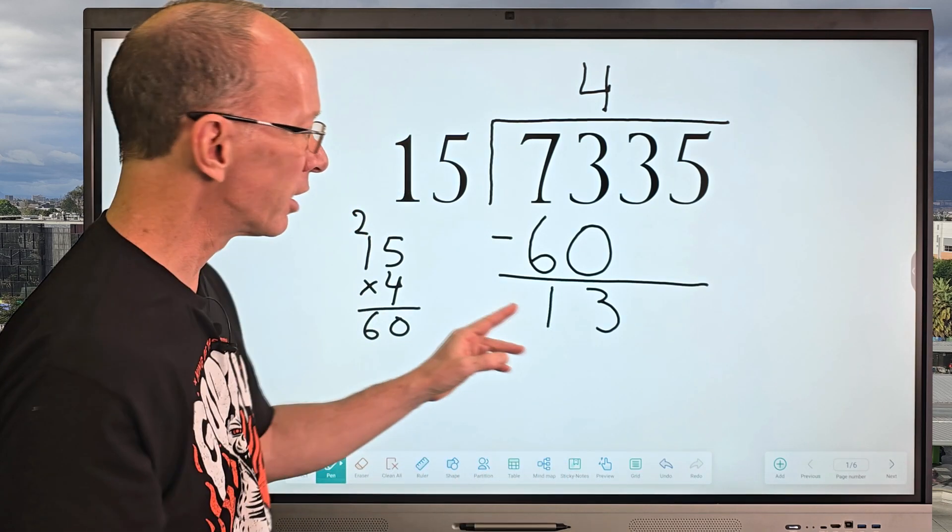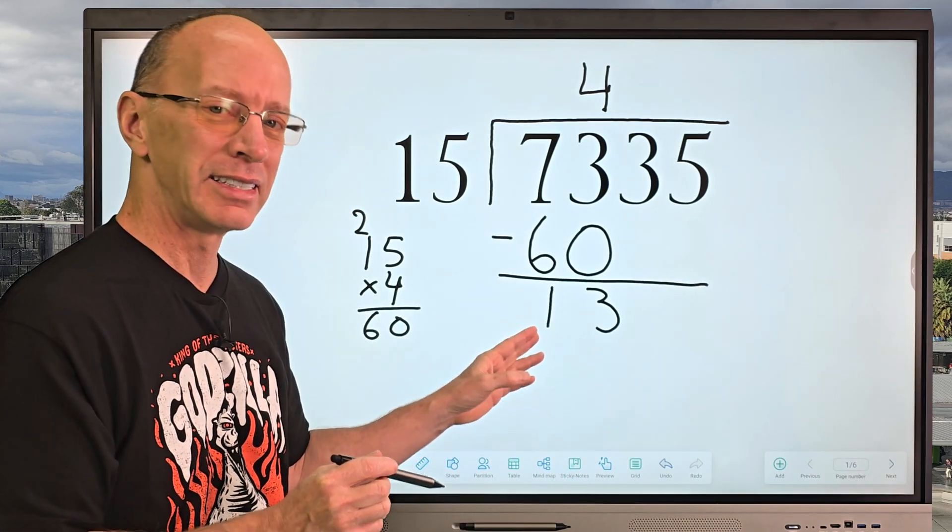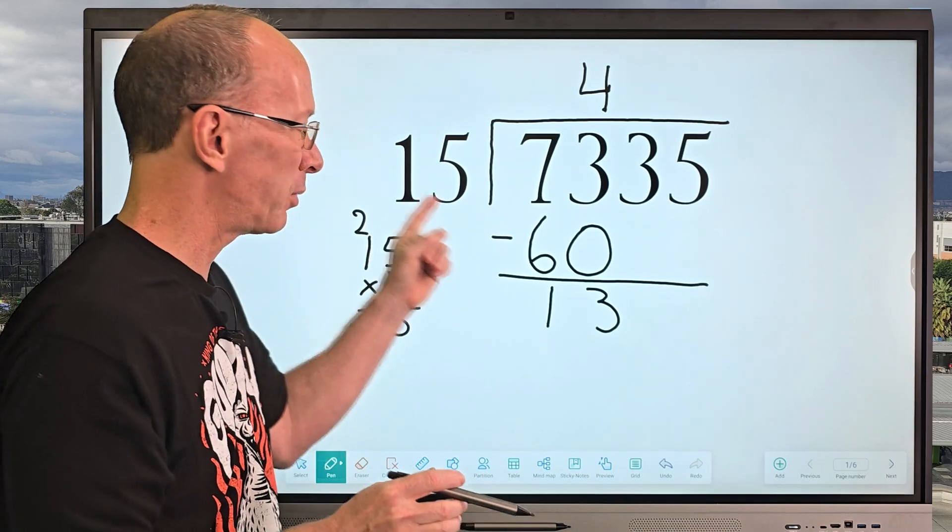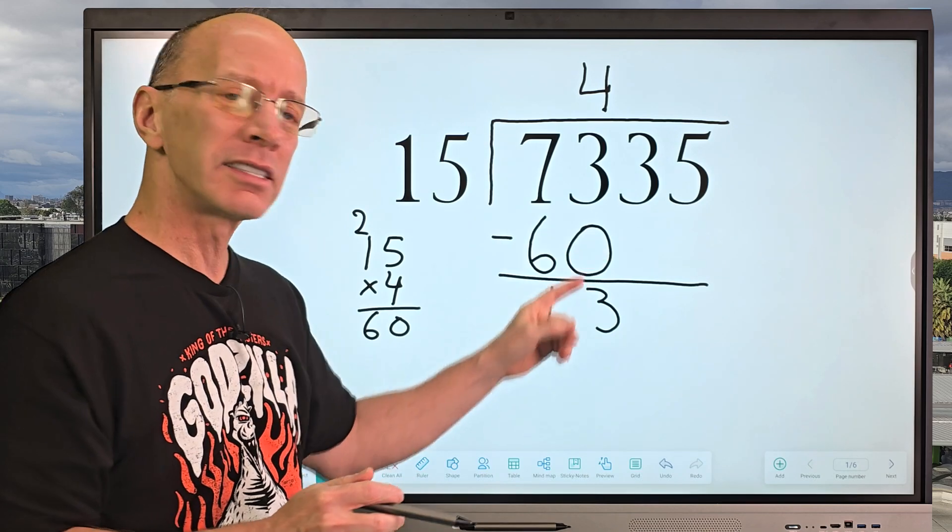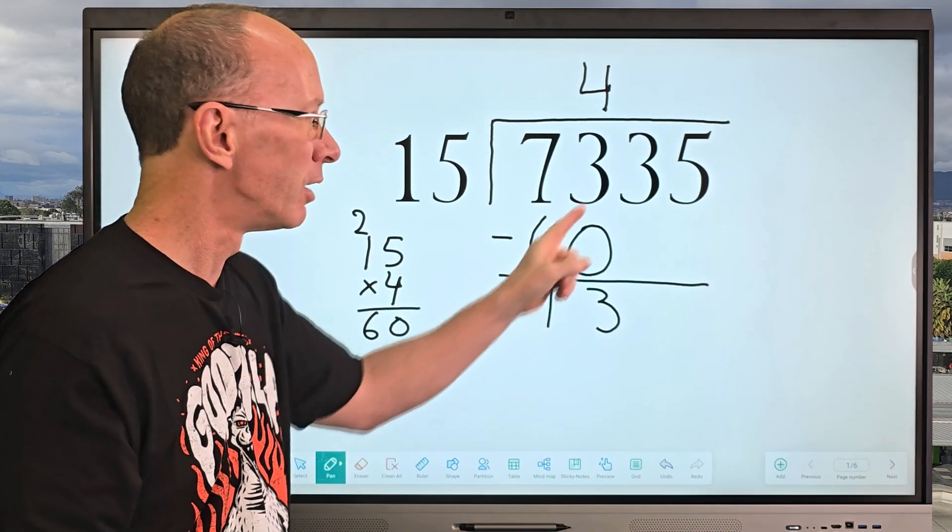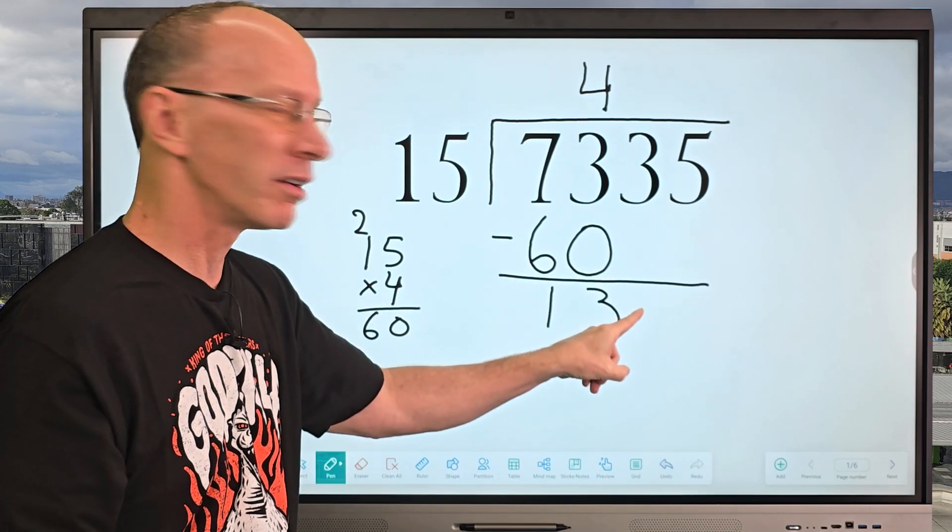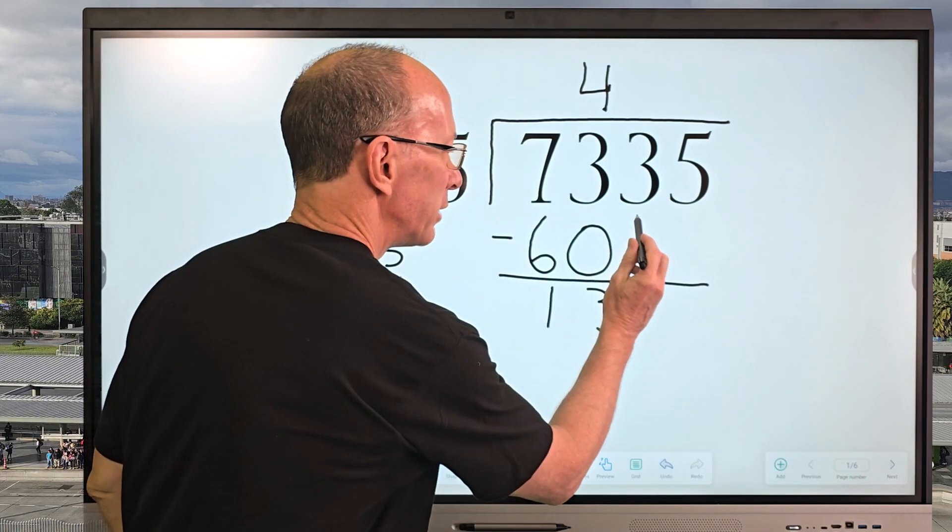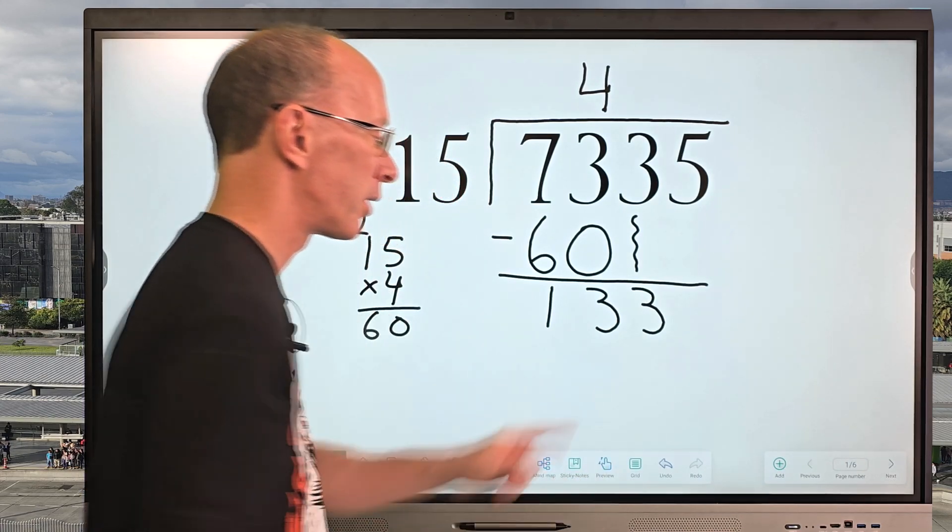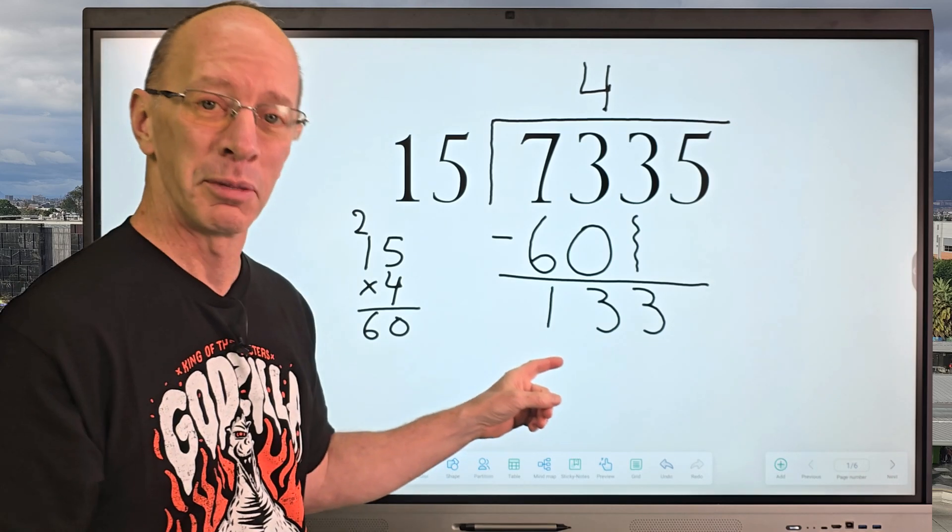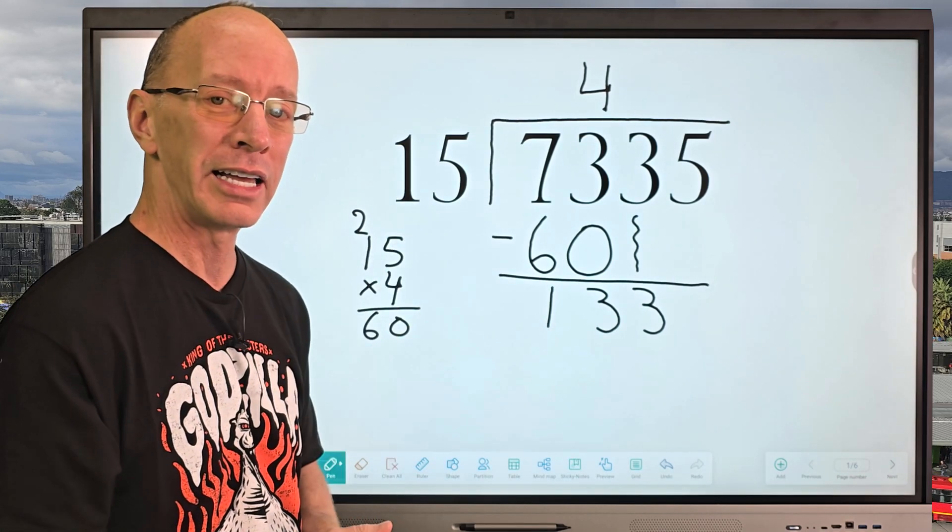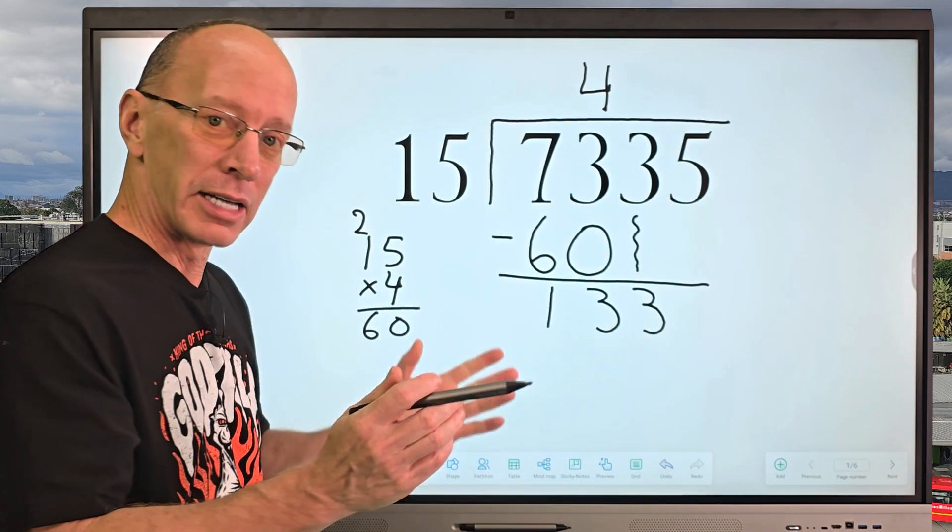3 minus 0 is 3. And then 7 minus 6 is 1. Now, I know you're looking at that number like, well, that's a double digit number. Don't worry. Remember, I can't put 15 into 13, can I? So the next step is going to drop the next number down. We're just going to bring this all the way down here. Sometimes I like putting a little line there. And then I put the 3 right here. So now I got a pretty big number, don't I? I have to put 15 into 133. That's all right.